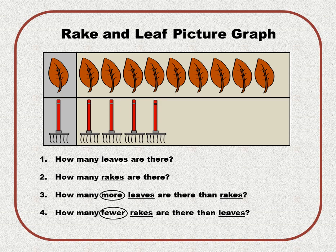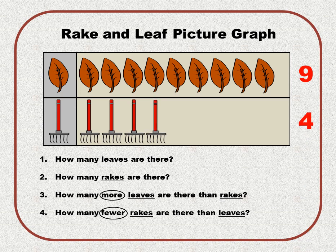Here's another graph — this is the rake and leaf picture graph. We'll use the data to answer the questions below. Question number one says: how many leaves are there? Don't count the first one. Here we go: one, two, three, four, five, six, seven, eight, nine — there are nine leaves. Question number two says: how many rakes are there? One, two, three, four — there are four rakes.